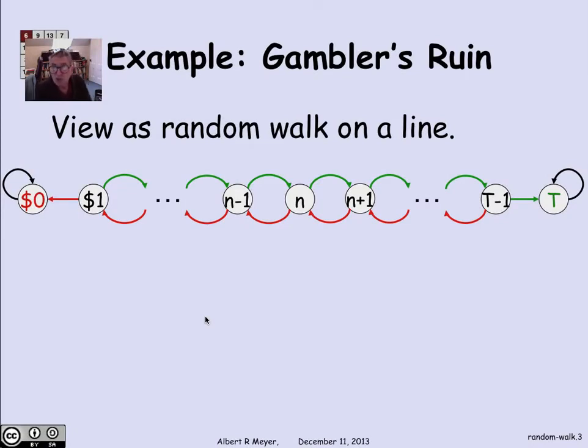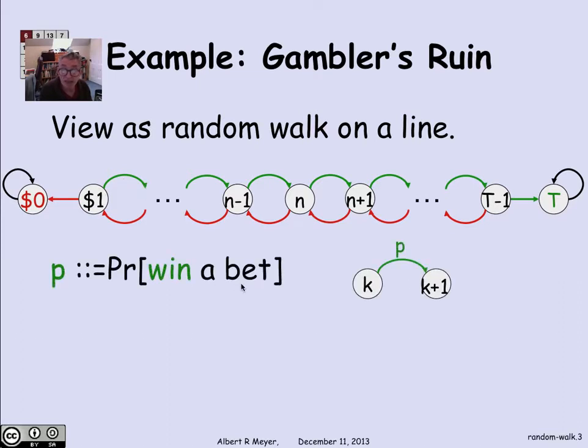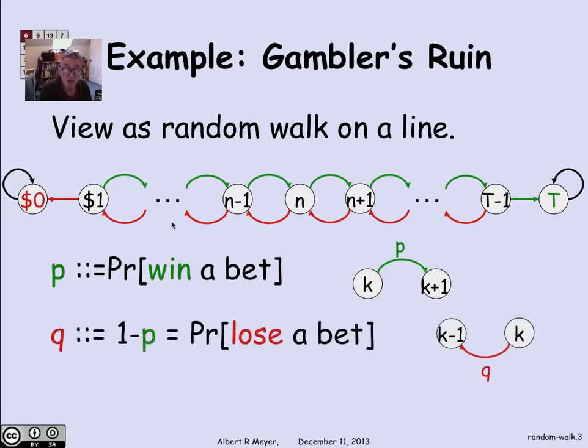Now, Gambler's Ruin can be seen as an example of this kind of random walk. The states were the amount of money that you had ranging from 0 when you're bankrupt to T when you've reached your target, and N is the start state, your initial stake. The green edges are weighted with the probability P of winning a bet, so we have transitions from K to K plus 1 for K less than T with weight probability P. Likewise, the red edges are weighted with the probability of losing a bet, Q, or 1 minus P.